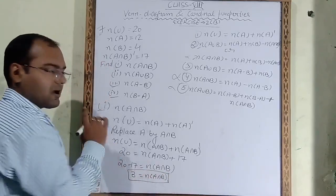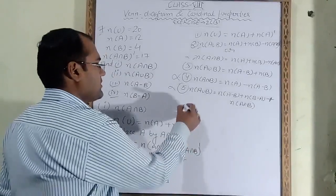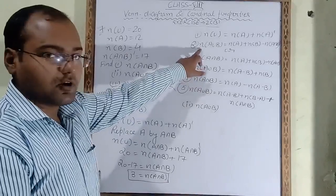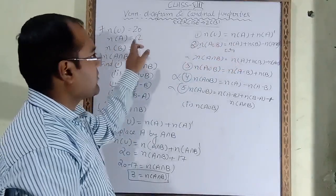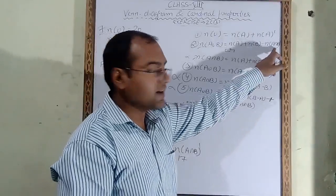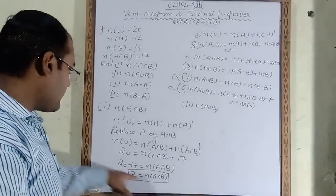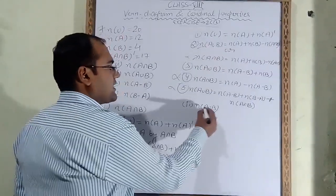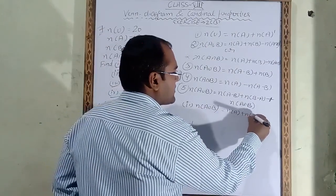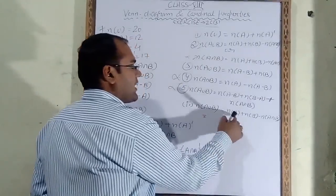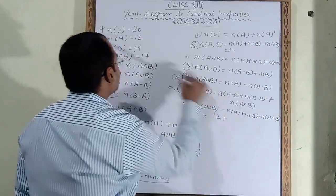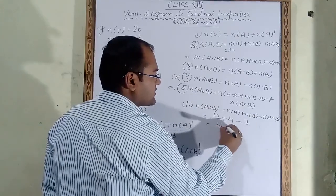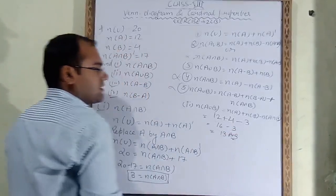To find N(A∪B): use the formula N(A∪B) = N(A) + N(B) − N(A∩B). We have N(A) = 12, N(B) = 4, N(A∩B) = 3. So N(A∪B) = 12 + 4 − 3 = 13.